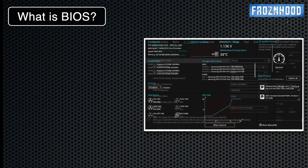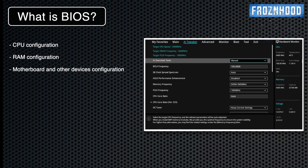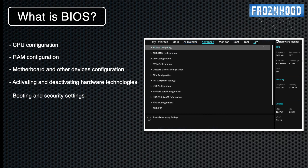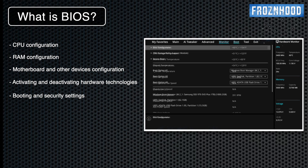Inside the BIOS you can set many settings that define the way your hardware works, such as CPU power, voltage and speed, RAM voltage and timings, critical motherboard settings, cooling control, booting options, and many others.